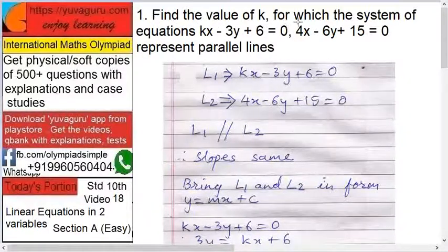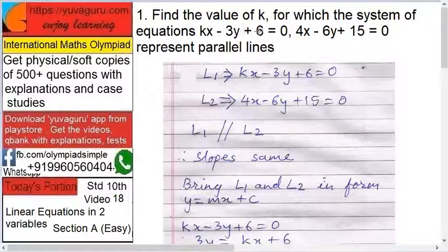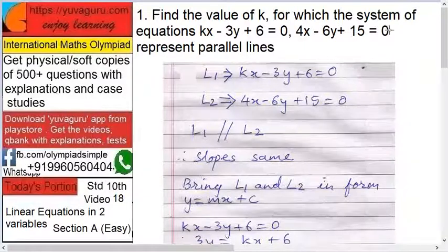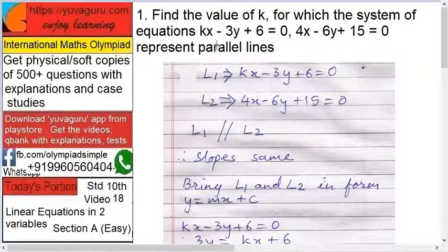Find the value of k for which the system of equations kx minus 3y plus 6 equals 0 and 4x minus 6y plus 15 equals 0 represent parallel lines. Now remember one important part.